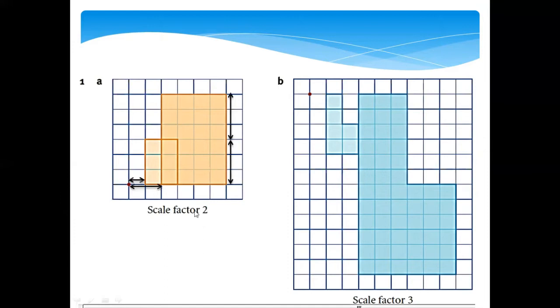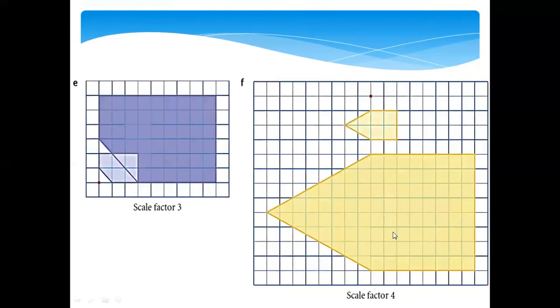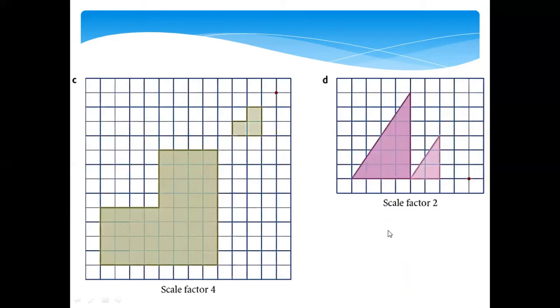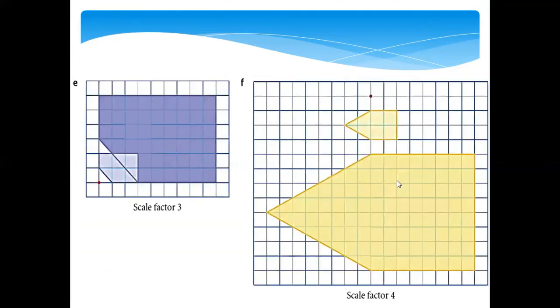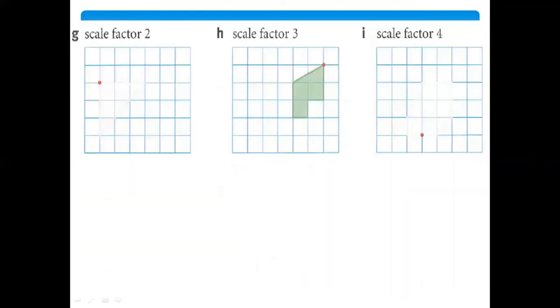It is double because the scale factor is two. For all the other shapes in Question 1, you do the same thing — you make it double depending on the scale factor.